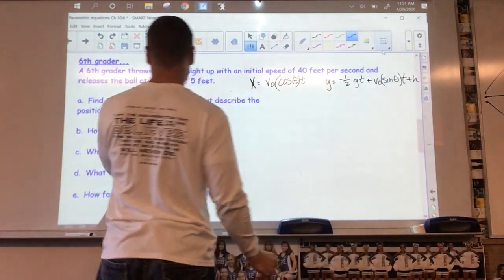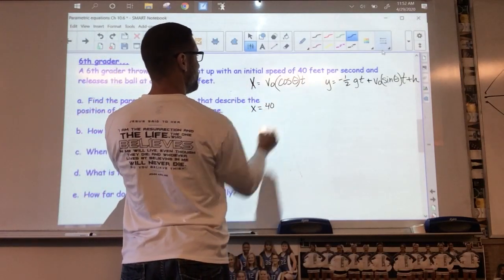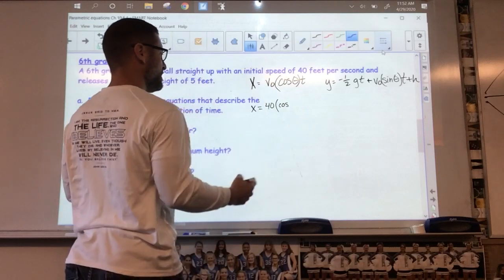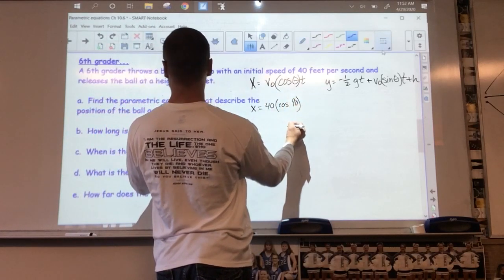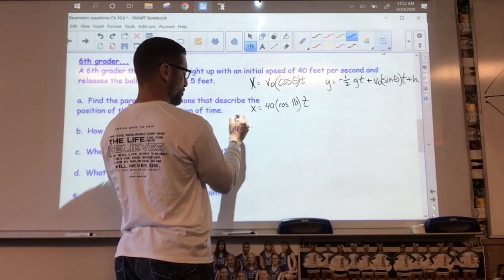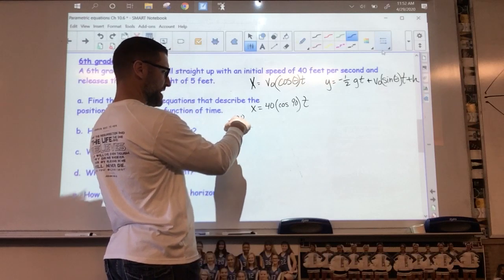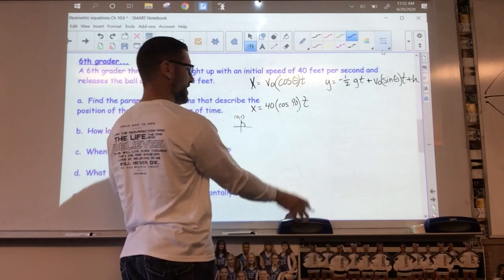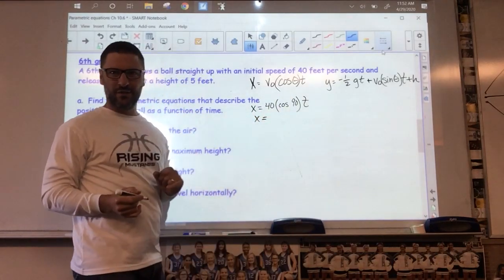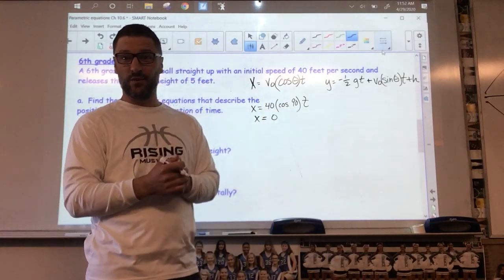So let's do this. Find a parametric equation that describes the position of the ball as a function of time. My first one x equals, well, my initial velocity is 40 feet per second times the cosine of the angle, cosine of 90 times t. Cosine of 90 is 0, so it's 40 times 0 times t. x equals 0. That ball goes straight up and straight down. There really isn't a horizontal component on this one.